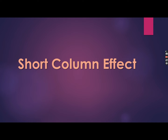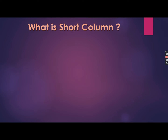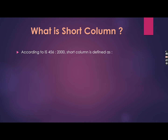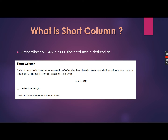Hello everyone, this is MD Seeker. Welcome to a new video tutorial on short column effect. Let me define the short column first. According to IS456 2000, a short column is defined as a column whose ratio of effective length to its least lateral dimension is less than or equal to 12. That is, L_eff divided by b is less than or equal to 12, where L_eff equals effective length and b equals least lateral dimension of the column.